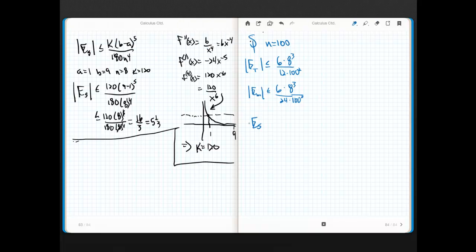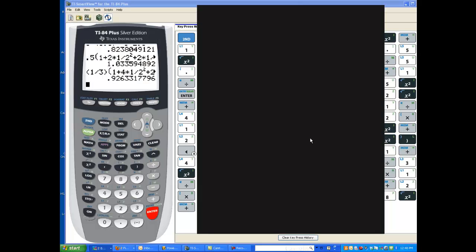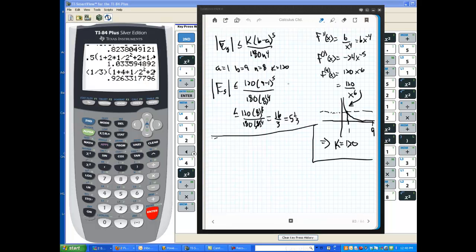Now, look at this guy. How about the error of the Simpsons? And I'll throw these on the calculator real quick here in just a sec. This is going to be less than or equal to 120 times 8 cubed divided by 180. Now, watch this. This is where it gets out of hand. I'm going to go 100 to the 4th, okay? Now, let's go over to my calculator just for giggles.